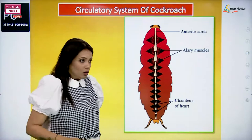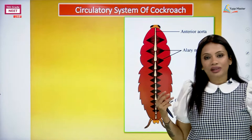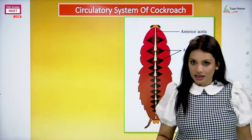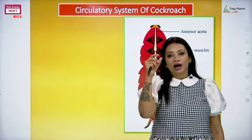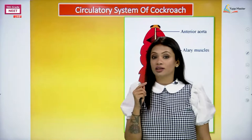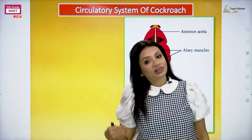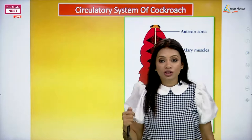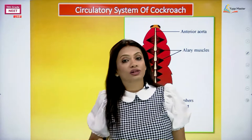Coming ahead, when we talk about the circulatory system, we need to know what exactly are the different parts we are going to be studying. Our approach to any system will first deal with the parts. Like in the last lecture when we learned about the digestive system, remember the three parts: foregut called stomodeum, midgut called mesenteron, and hindgut called proctodeum.